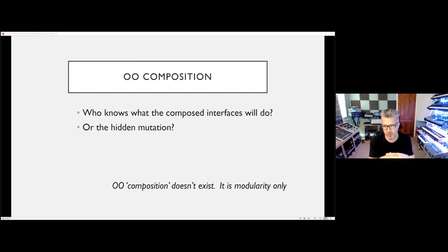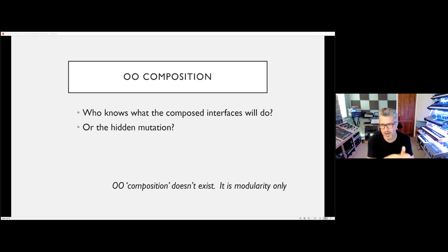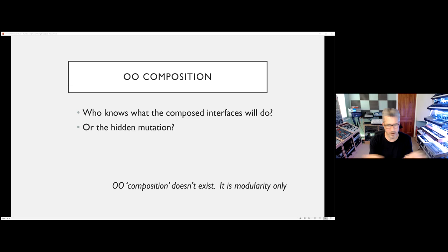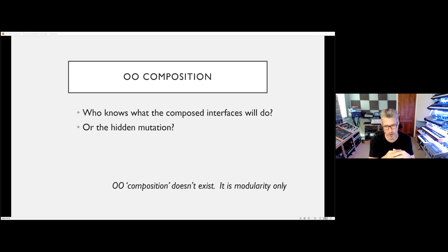A system is truly compositional when it exhibits no emergent behavior — when we are able to predict how a composed system will act just by looking at its components and how they are related. When we compose things, we want more complicated behavior, but we don't want unexpected side effects. OO composition doesn't really exist — it's modularity only. Well, it is possible to do true composition with OO, but the way it's practiced in industry is not true composition.